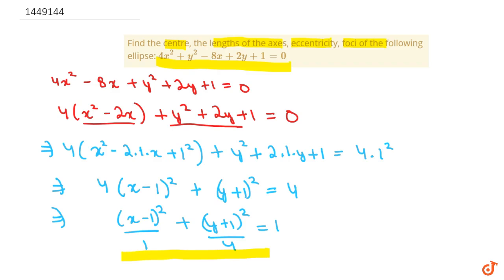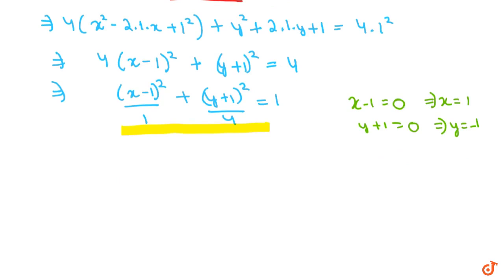Now we have to find the center. Setting x - 1 = 0 and y + 1 = 0 gives x = 1 and y = -1. So the center of the ellipse is (1, -1).